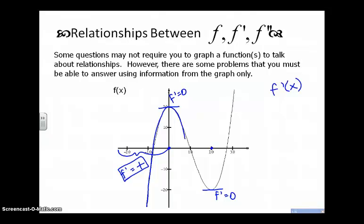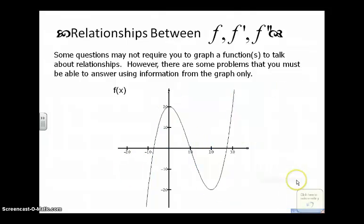The interval from zero up to two, all of the outputs on the derivative function are negative because f is decreasing. From two to positive infinity, all of the outputs on the first derivative function are positive because f is increasing. We knew we had a zero at zero and a zero at two. From negative infinity up to zero, the outputs on the derivative function are positive, meaning they lie above the x-axis.